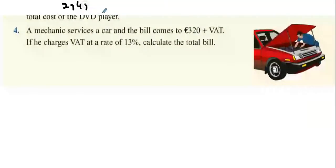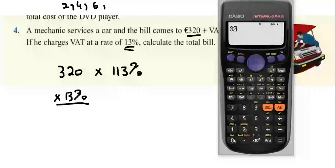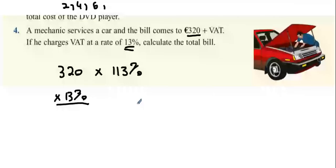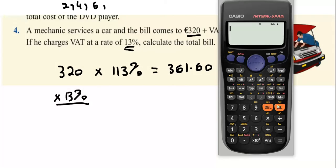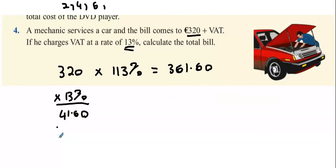A mechanic services a car and the bill comes to £320 plus VAT. The VAT is 13%. Calculate the total bill. You can do it two ways. The first way is you multiply by 100% plus the VAT, so 113%. The second way is to get 13% and add it on. I generally multiply by 113% because it requires less effort. So 320 multiplied by 113% equals £361.60.